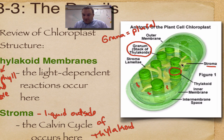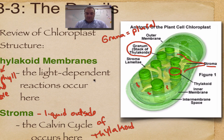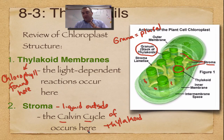Don't get confused by this picture. These yellow things are not the stroma — the label should be pointing down at the space right in here. These here are just lamellae that help connect and make sure that these poker chips stay standing straight up, but we're not going to worry about that one. The Calvin cycle, which is the second part of photosynthesis, is going to occur in the stroma.